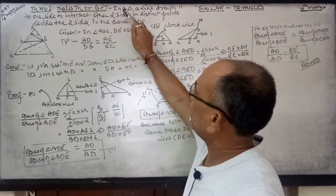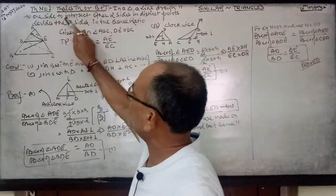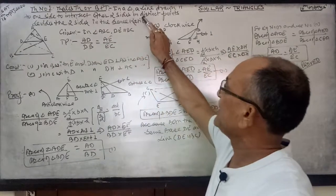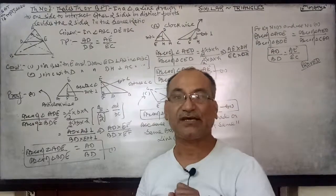In this theorem, in a triangle a line drawn parallel to one side to intersect other two sides in distinct points divides the two sides in the same ratio. This is the theorem.